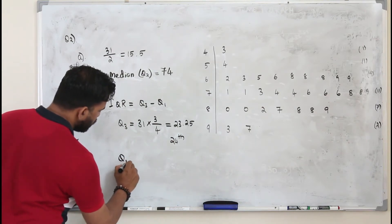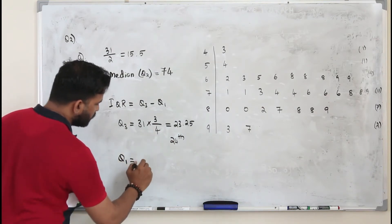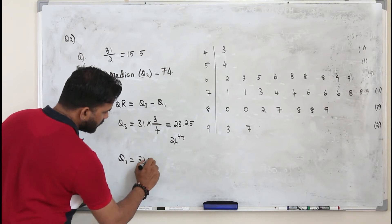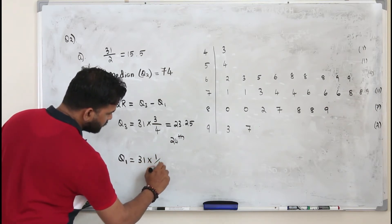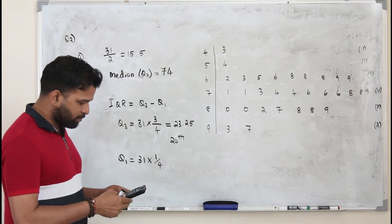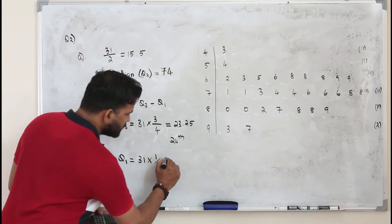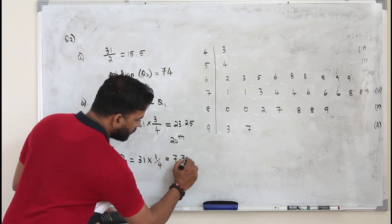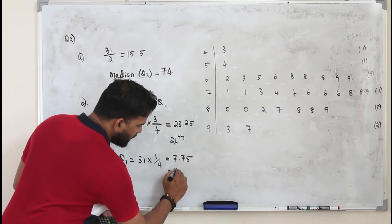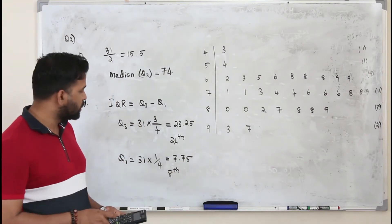And for Q1, here it's 3/4. For Q1, you take 1/4. So 31 divided by a quarter, which is 7.75. So take the 8th entry. That's your Q1.